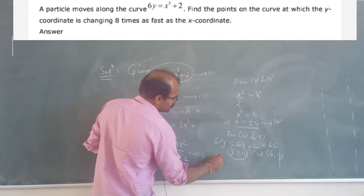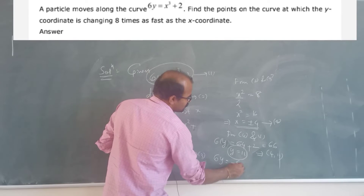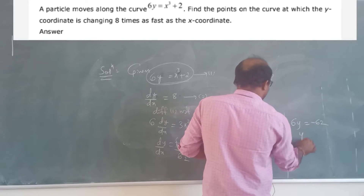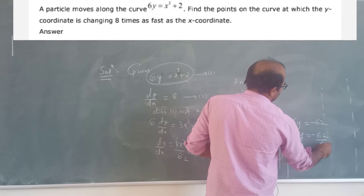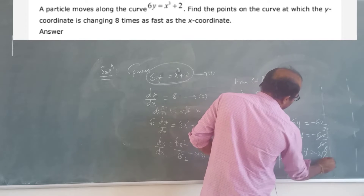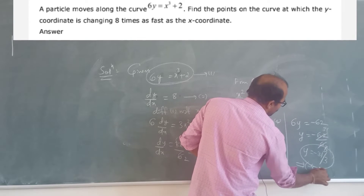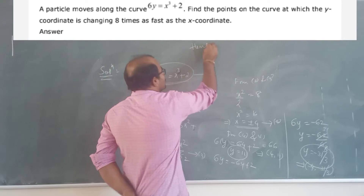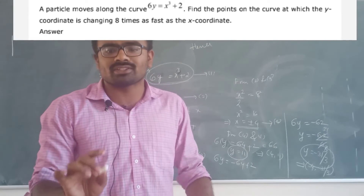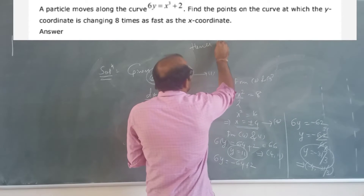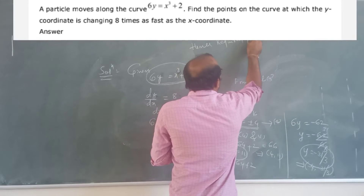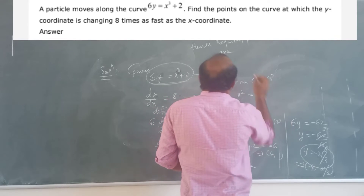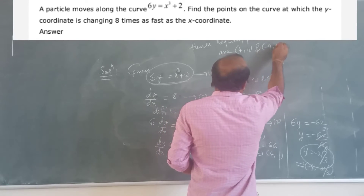For the second point, put x = -4: 6y = (-4)³ = -64, so 6y = -62, giving y = -62/6 = -31/3. So the required points are (4, 11) and (-4, -31/3).